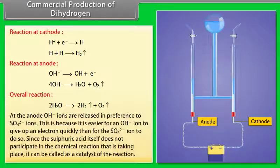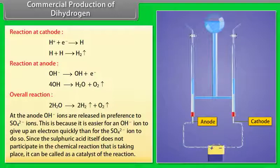At the anode, OH- ions are released in preference to SO4 2- ions. This is because it is easier for an OH- ion to give up an electron quickly than for the SO4 2- ion to do so. Since the sulphuric acid itself does not participate in the chemical reaction that is taking place, it can be called as a catalyst of the reaction.